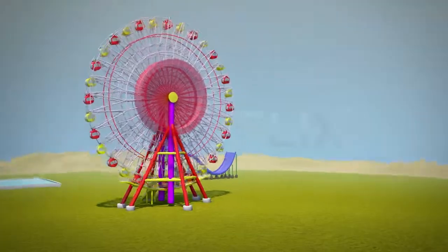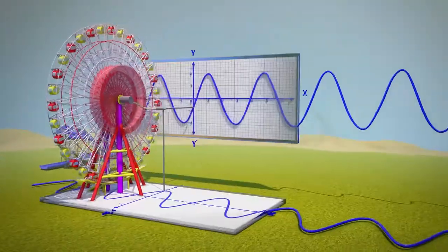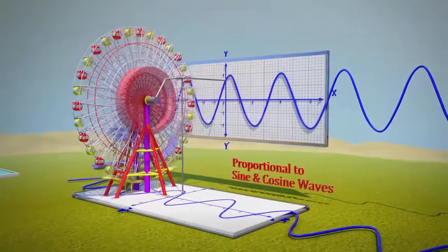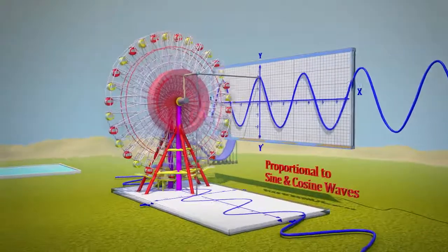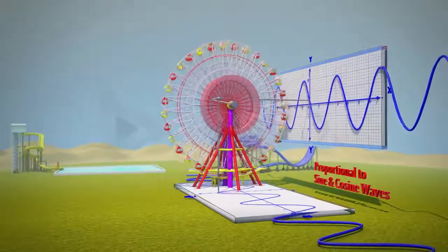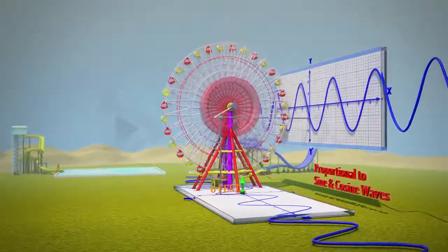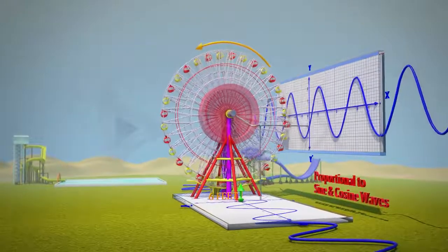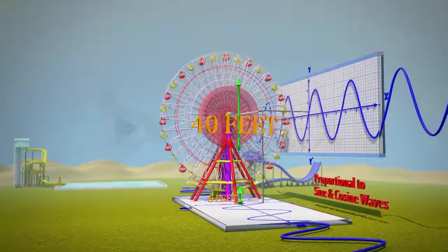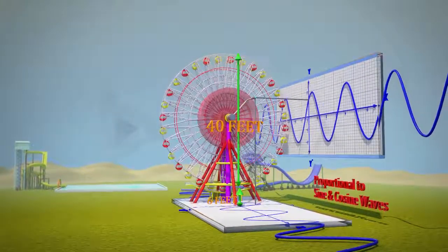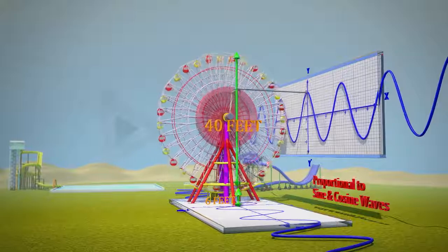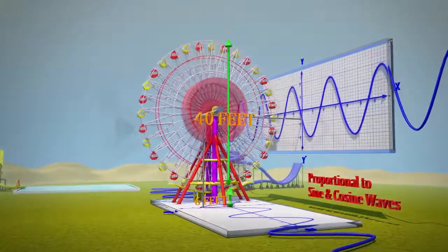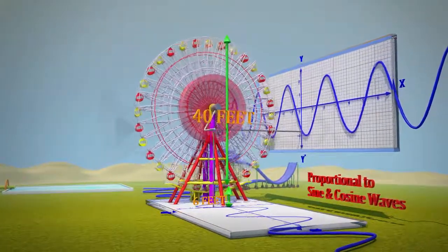How do we find the position equation and graph of a point on a ferris wheel that starts at a low point of six feet off the ground, then spins counterclockwise to a height of 46 feet off the ground, before going back down to six feet in 60 seconds?